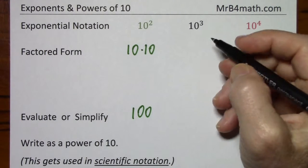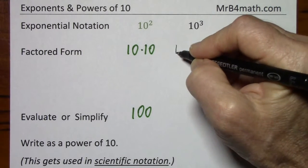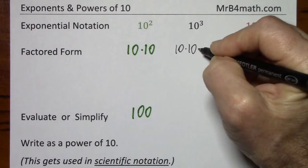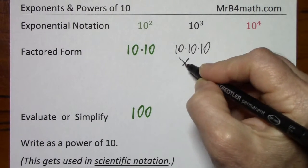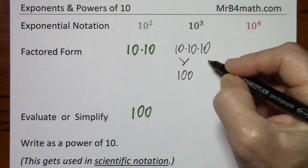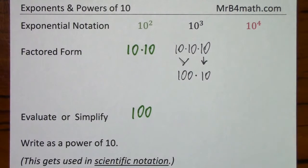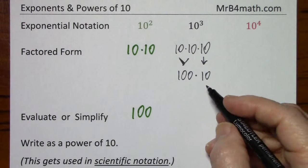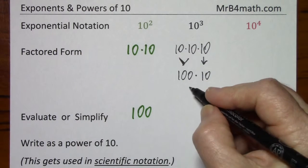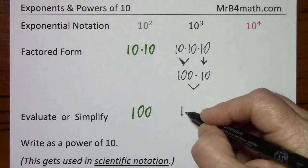For 10 to the 3rd in factored form, 10 times 10 times 10. If we evaluate this, we get 100, bring this down, times 10. And then 100 times 10, I don't want to show the multiplication. But you have 100.